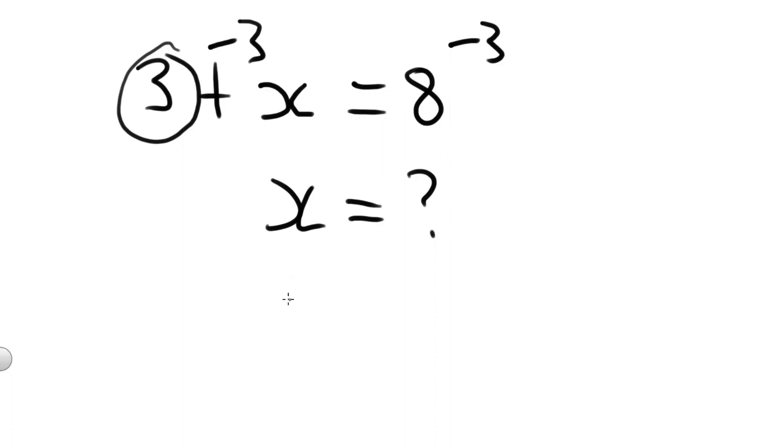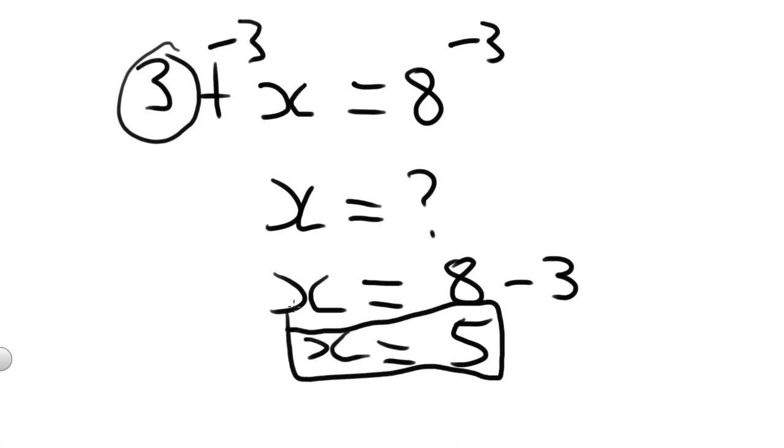So on the left-hand side, we'll be left with X. On the right-hand side, we'll be left with 8 minus 3. And as we all know, 8 minus 3 equals 5. So that's our final answer. X equals 5, as you probably guessed, without even using algebra.